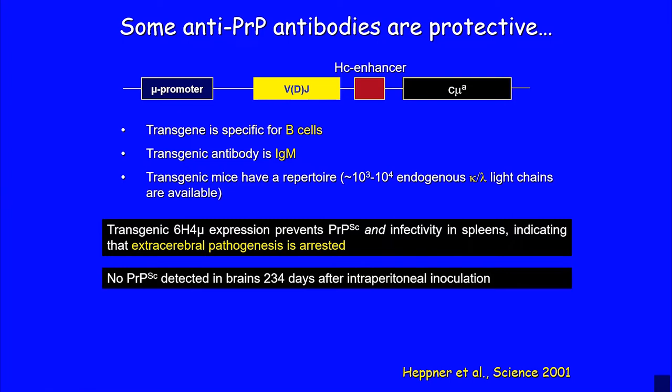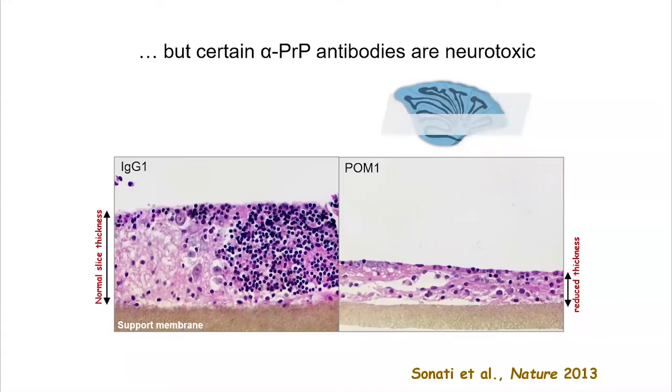That was obviously very exciting, and now there are many antibodies against Alzheimer's, Parkinson's, frontotemporal dementia, and many other diseases. But we continued to work on the prion protein, and then we found, very much to our horror, that some of these anti-prion antibodies are extremely neurotoxic.